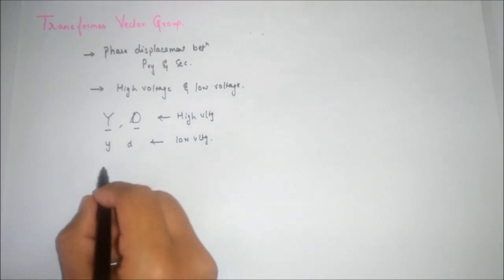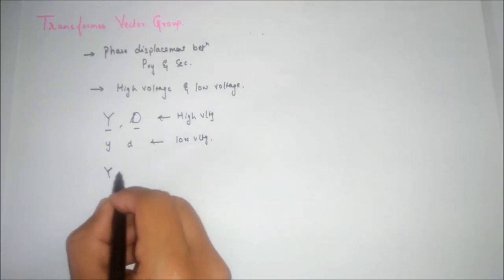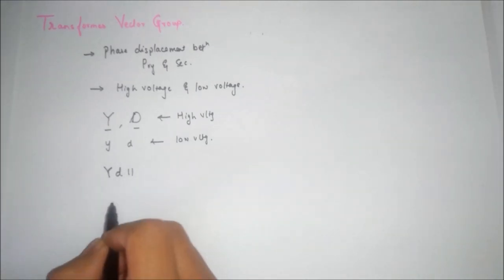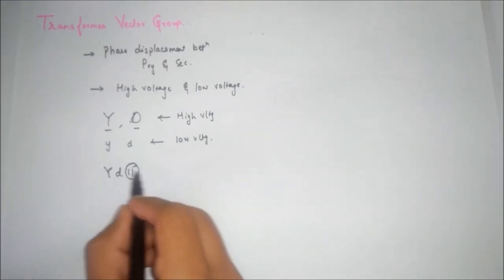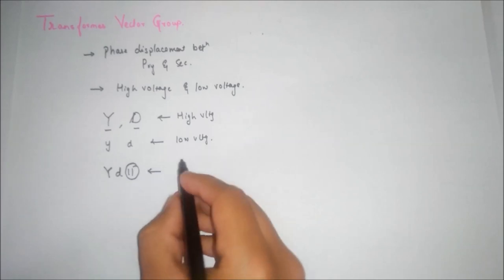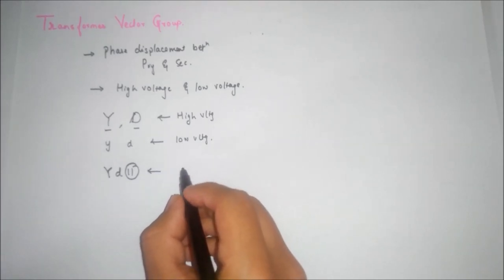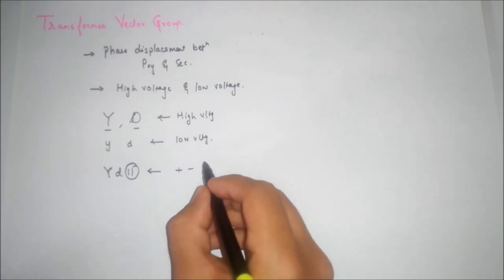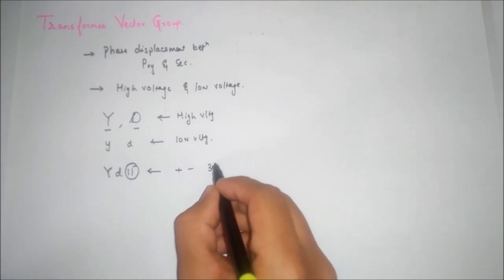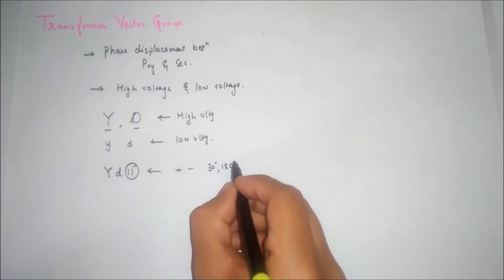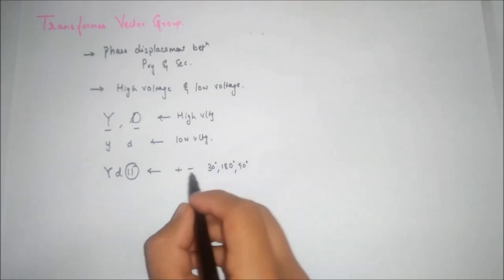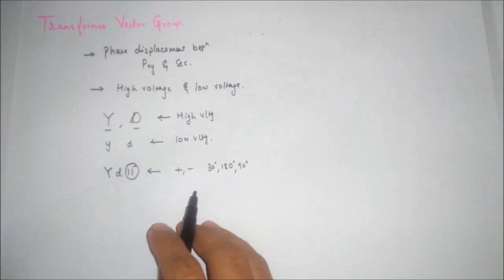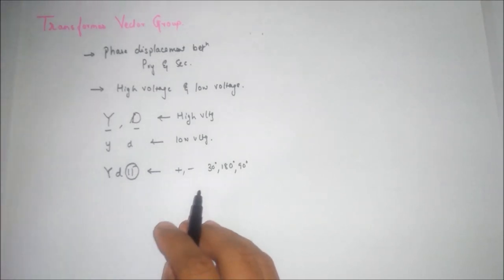For example YD11 लेते हैं — यह जो 11 वाला part है वो denote करता है कि कितने degree phase displacement है। 30 degree है, या 180 degree है, या 90 degree है — यह number phase displacement बताएगा।